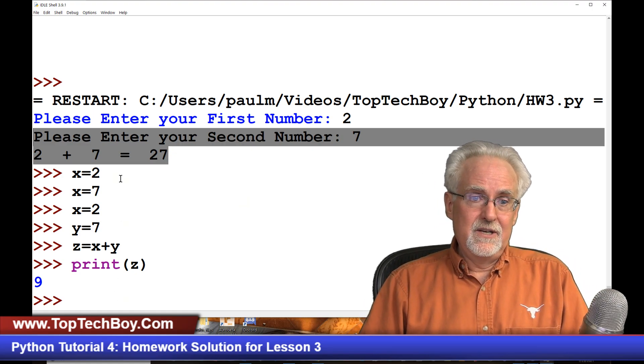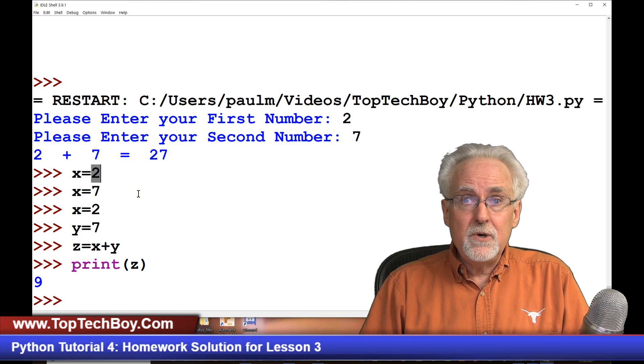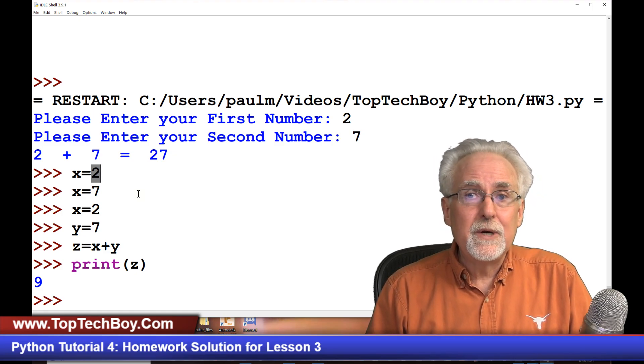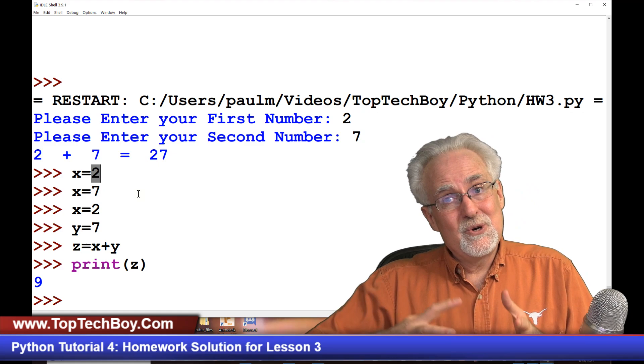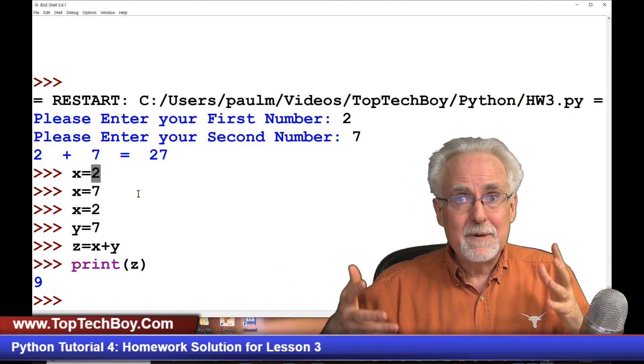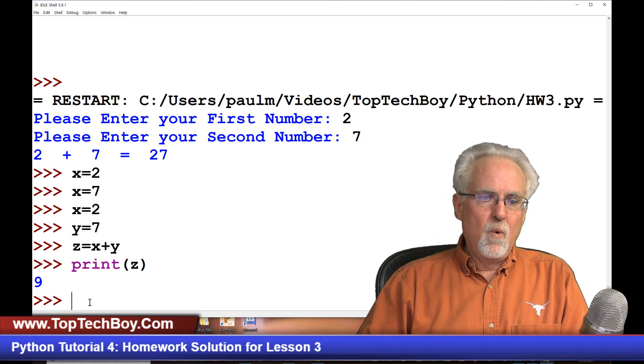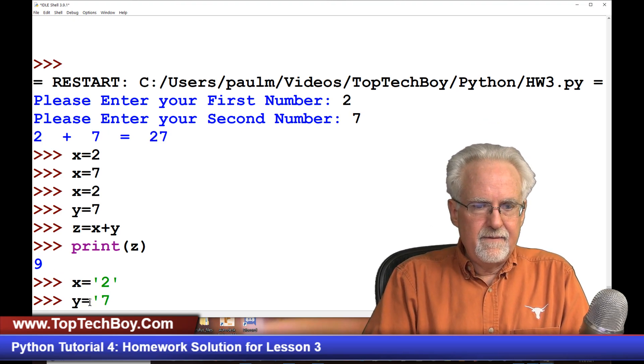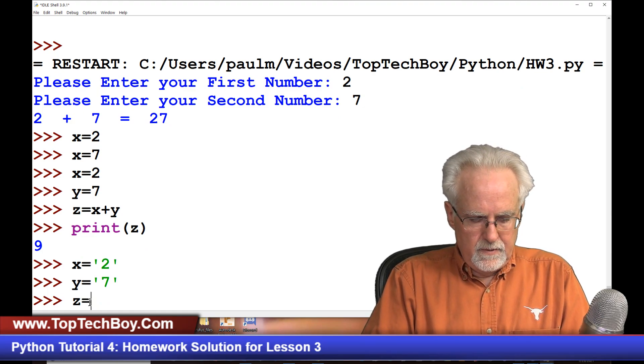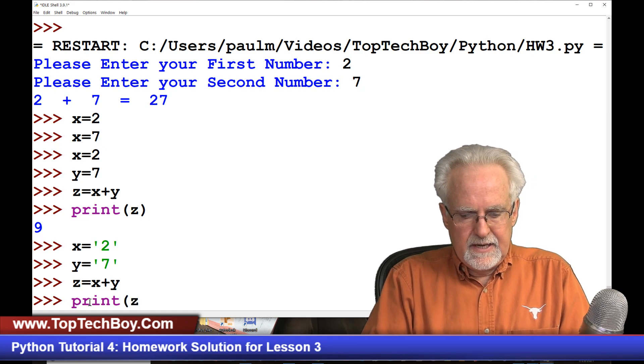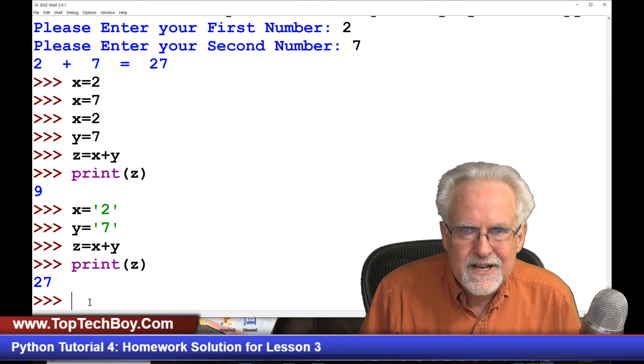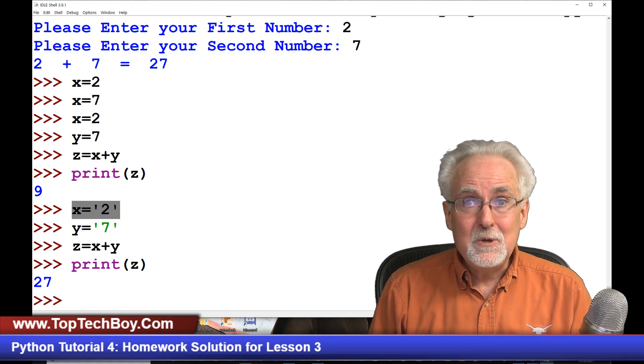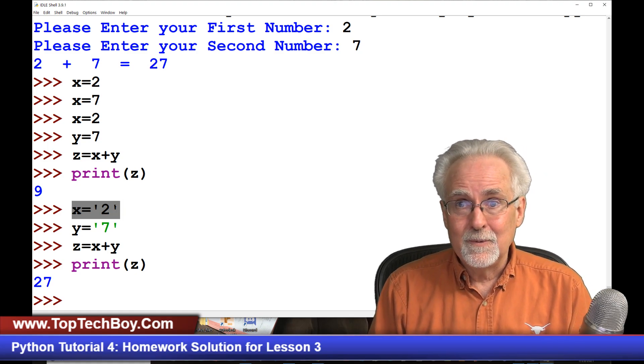What did I tell you in lesson one and lesson two is like the number one thing that is going to cause you problems in Python? And that is you are thinking a variable is one type and Python is thinking the variable is another type. So what you thought is you thought when you put in the number two, you were putting in a number, but Python decided to read it not as a number, but decided to read it as a string. And so you are working in a world where you thought you were using numbers, but Python was using strings.